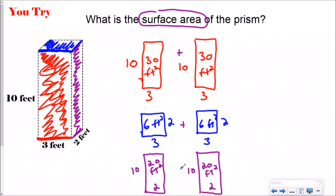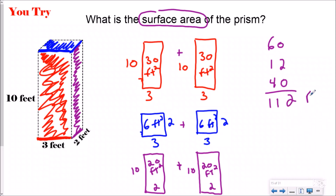To find the surface area — how much I would need to cover the entire rectangular prism — I just need to add up all my sides, all my areas. So it's going to be 60, plus 12, plus 40. When I add these together, your answer should be 112 feet squared. That is the surface area — how many square feet it would take to cover the entire outside or surface of your rectangular prism.